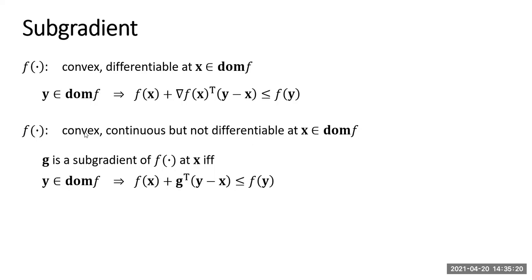Now suppose this function f is not differentiable at this point x. Then we can define a sub-gradient. A sub-gradient is a vector g. It is a sub-gradient if and only if, for any other point y, this property holds — replacing the gradient with g: f(x) plus g transpose times (y minus x) should be less than or equal to f(y). If this property holds, then g is a sub-gradient of this function at the point x.